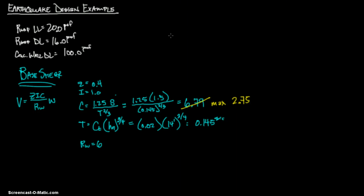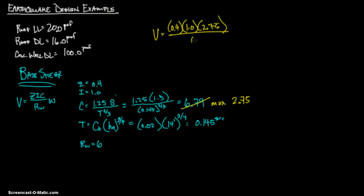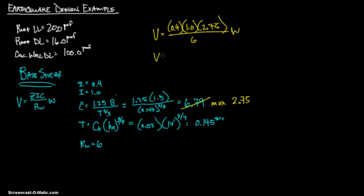Now we have everything we need. V equals Z times I times C over Rw, times W. That's 0.4 times 1.0 times 2.75 divided by 6, times W, which gives 0.183 times W.